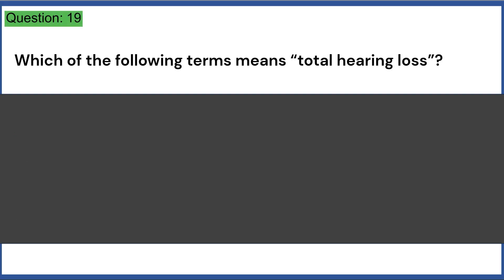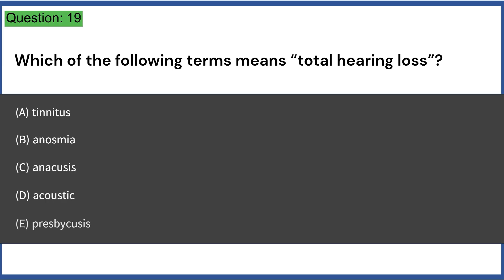Which of the following terms means total hearing loss? A. Tinnitus, B. Anosmia, C. Anacusis, D. Acoustic, E. Presbycusis. Answer: C.